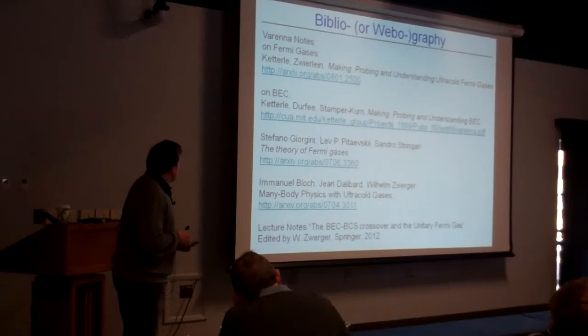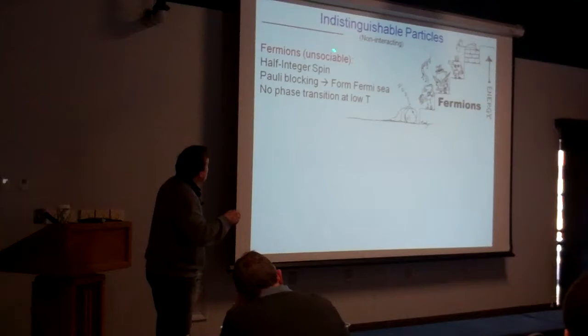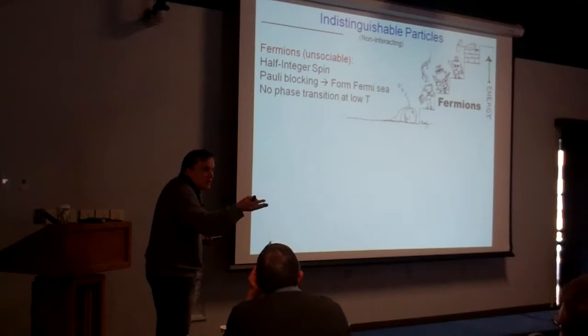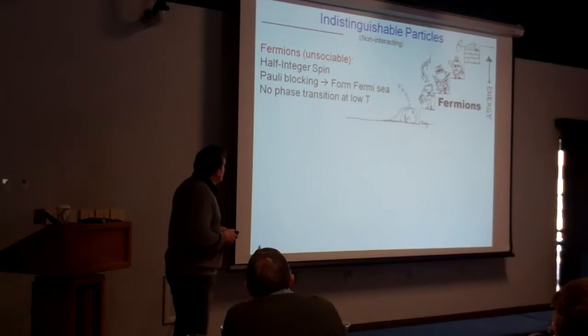Let's start with a wonderful cartoon to understand what we are talking about. Let's consider indistinguishable particles. As we know, there are two classes in the world. You are also either one of the two — maybe you are a fermion or you are a boson. To figure that out, you would have to calculate the total number of elementary particles you consist of: electrons, neutrons, and protons, and see whether it's an odd or an even number.